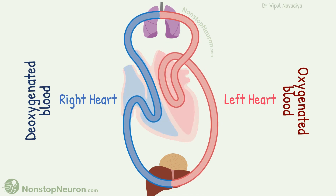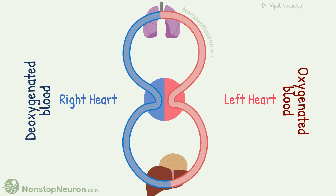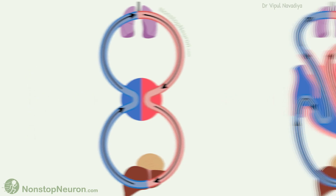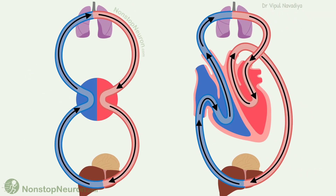But if we can forget the anatomy for a while, the circulation itself is much simpler. Of course, the realistic diagram is also useful in many ways. But if you ever get confused regarding the circulation, remember that it's just a fancy way of drawing the figure of 8.